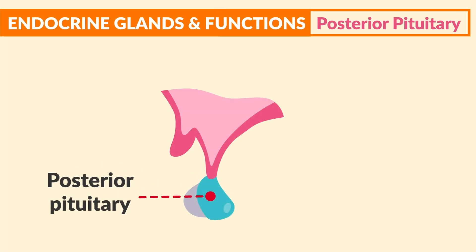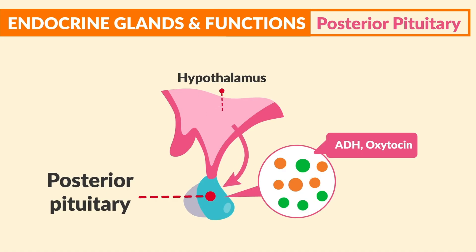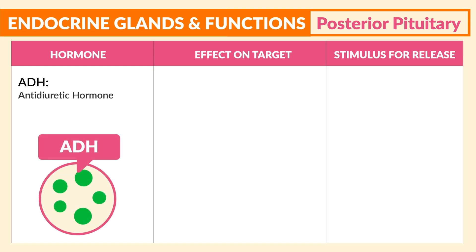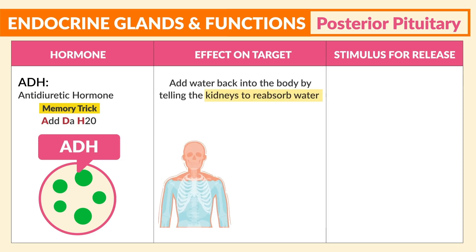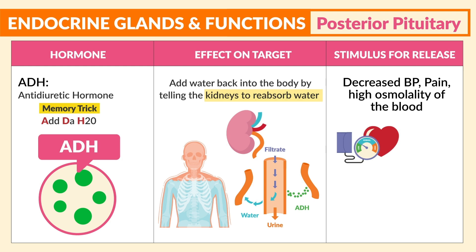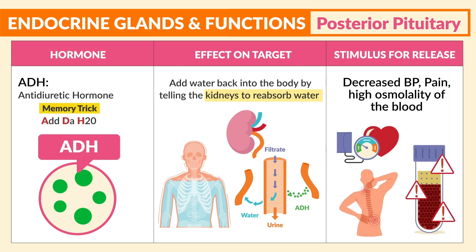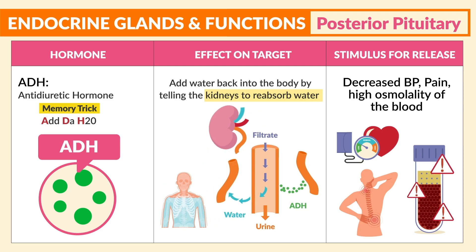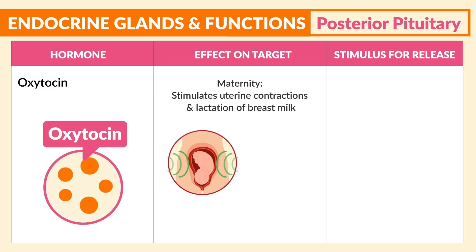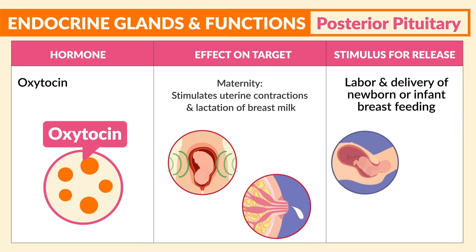Now moving on to the posterior pituitary. The posterior pituitary does not necessarily produce hormones directly, but rather stores and secretes hormones produced by the hypothalamus, which is what it's connected to. For the hormones: ADH, the antidiuretic hormone — memory trick: ADH adds the H2O, because it tells the kidneys to reabsorb water. Its stimulus is decreasing blood pressure, pain, and high osmolality — basically really thick blood, so we need to add more water to dilute it. Lastly, oxytocin stimulates uterine contractions and lactation, and its stimulus is labor, delivery, or a breastfeeding infant.